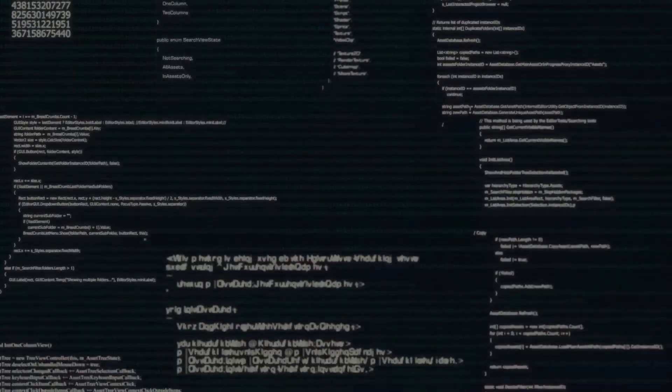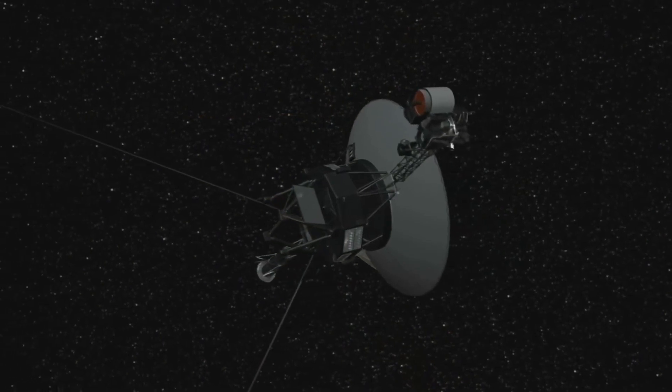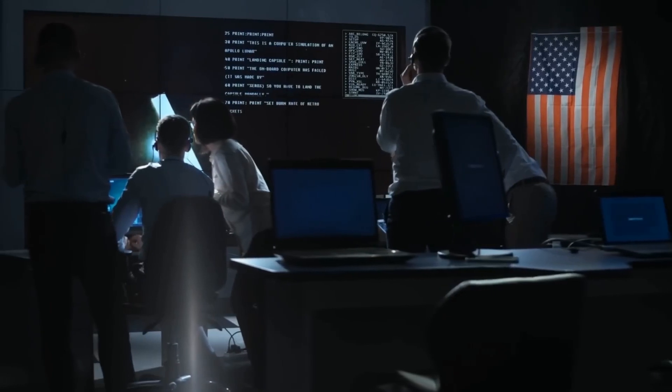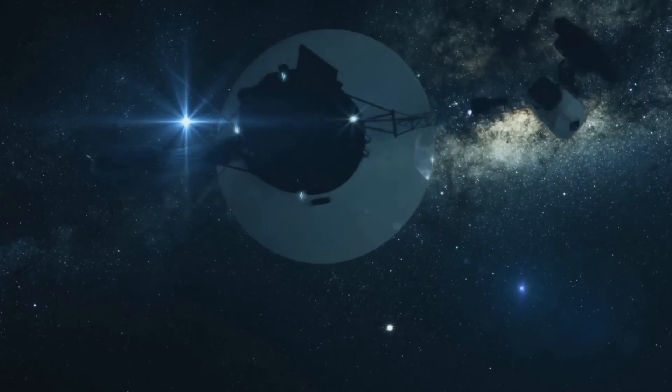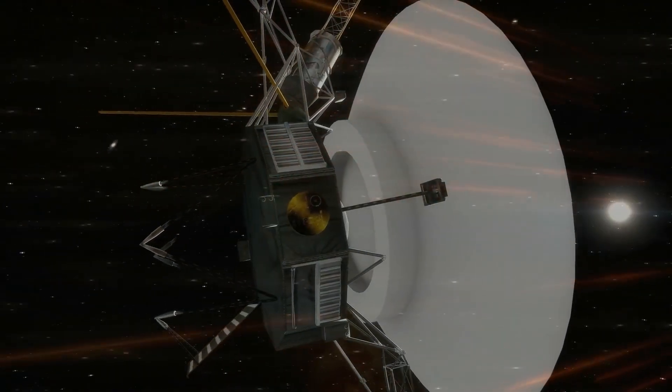In 2022, Voyager's attitude control system experienced a failure. The system is crucial to keeping the antennas pointed toward Earth. Prior to this failure, the probe's performance had been flawless, but the craft began sending incorrect telemetry data due to a malfunction in an onboard computer that had stopped working years earlier. This confused the craft and disrupted its ability to determine its orientation. However, NASA engineers managed to solve the problem by having the system revert to using an older computer.